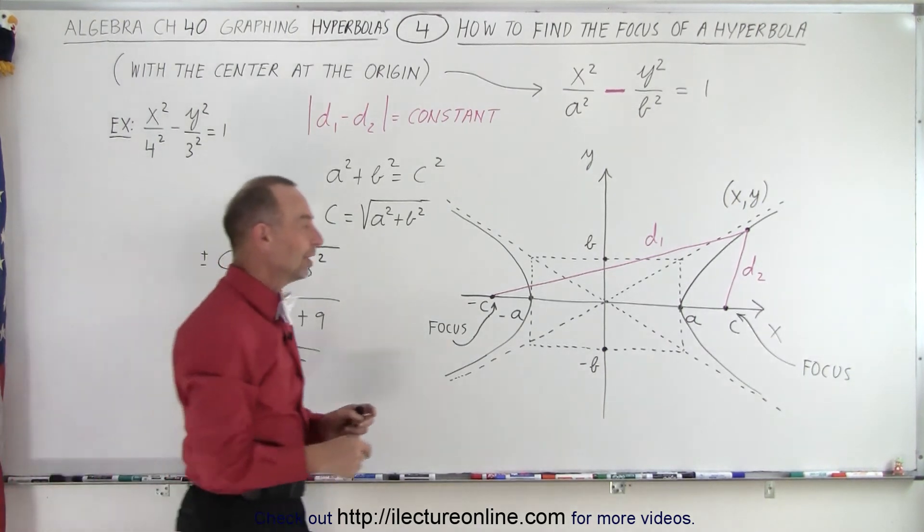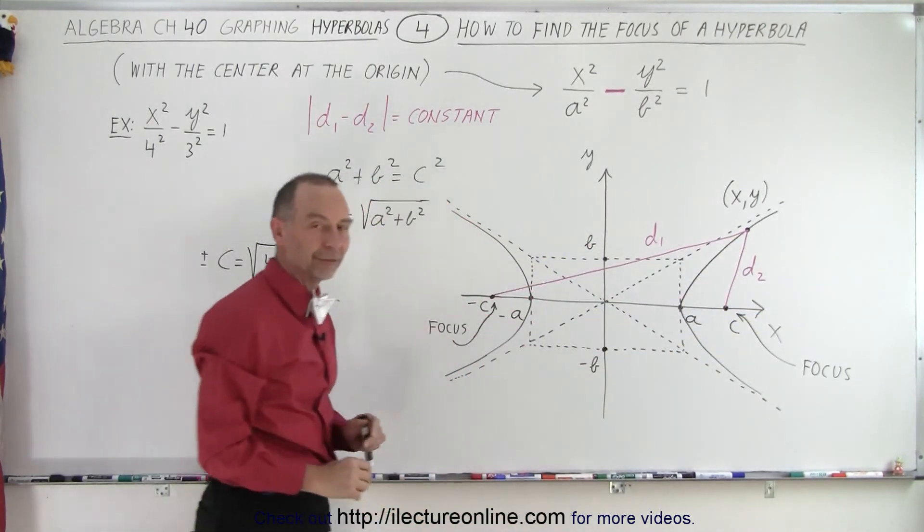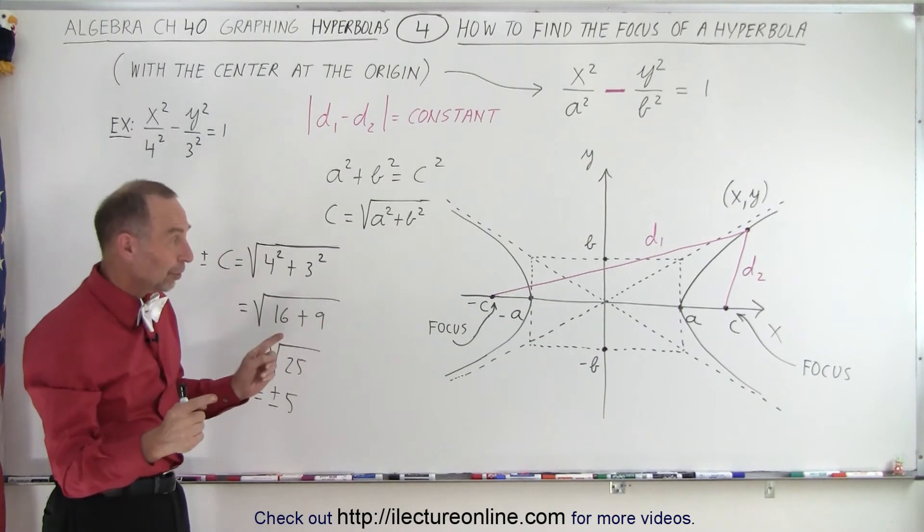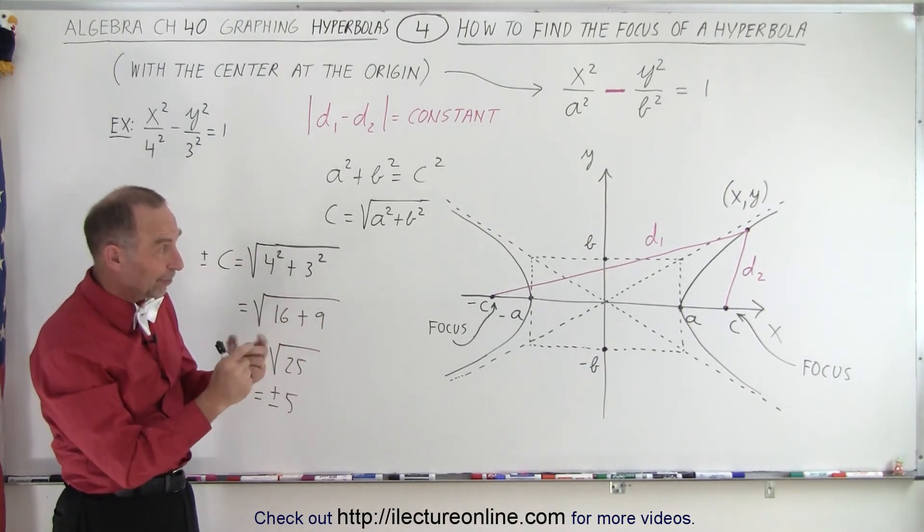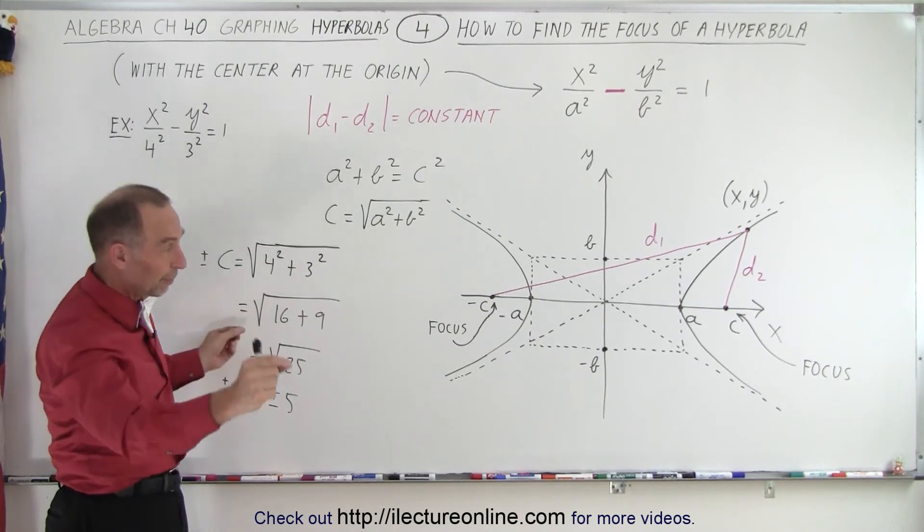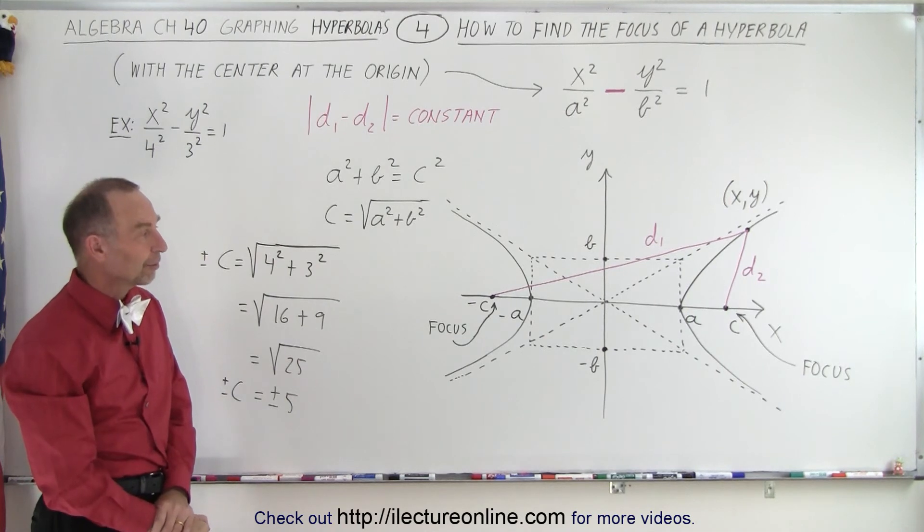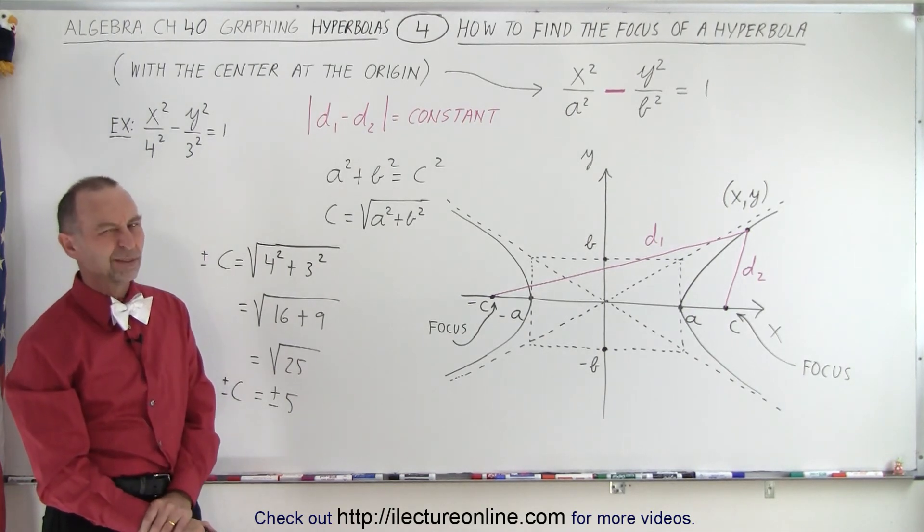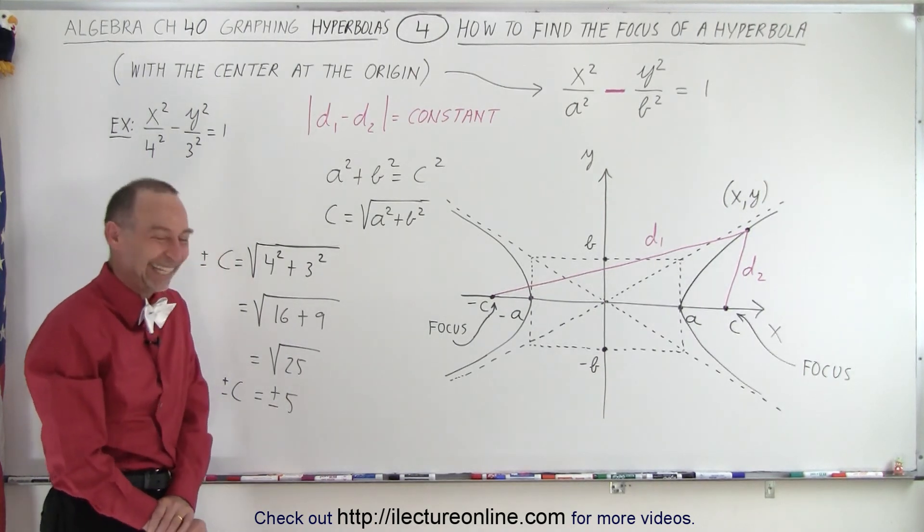If the focus is closer in versus farther out, it'll shape the hyperbola differently. That's right. If the two foci are very close together, then the difference in the distance will be very small. If they're far apart, then the distance difference is very large, and so it will change the shape of the hyperbola. We probably should do a video on that as well. That's actually a really good point.